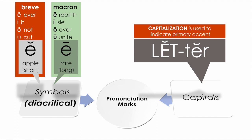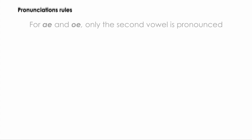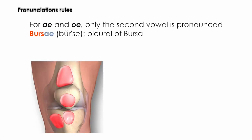Here are some rules regarding certain letter combinations. When vowels are combined together, like 'a' and 'e' or 'o' and 'e,' only the second vowel is pronounced. For example, in the word 'bursae,' the word ends in 'ae,' but in pronunciation we only pronounce the 'e' and not the 'a.'